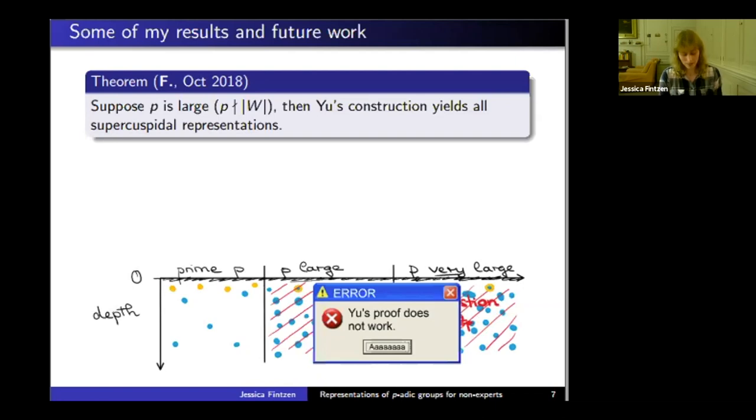Unfortunately, Yu's proof that his construction gives us supercuspidal representations doesn't work. More precisely, his proof relies on a statement in the literature that contained a typo.